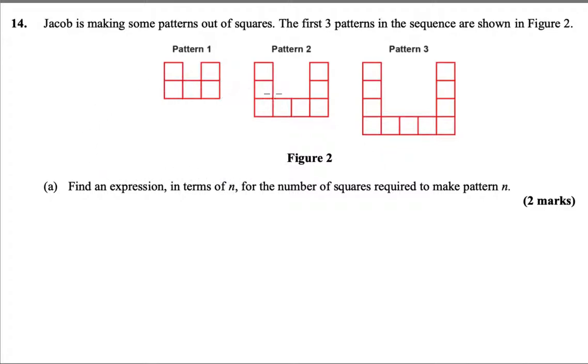Okay, 14 part a. We've got some patterns with squares. This one's got 1, 2, 3, 4, 5 squares. This one's got 1, 2, 3, 4, 5, 6, 7, 8. This one's got 1, 2, 3, 4, 5, 6, 7, 8, 9, 10, 11. Hopefully you can see every time we're adding two more to the sides and one on the bottom.